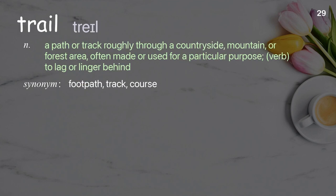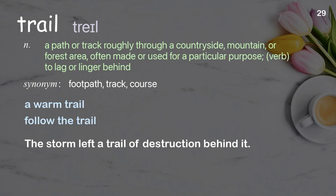Trail: A path or track roughly through a countryside, mountain, or forest area, often made or used for a particular purpose. Verb: to lag or linger behind. Examples: A warm trail. Follow the trail. The storm left a trail of destruction behind it.